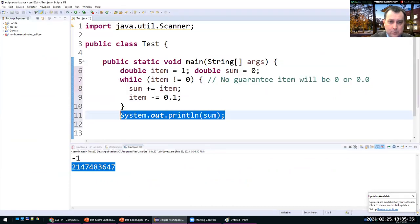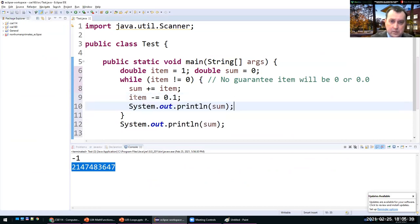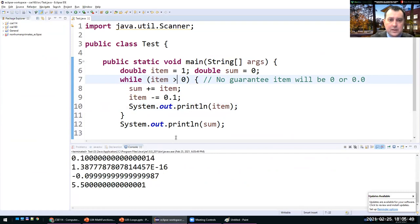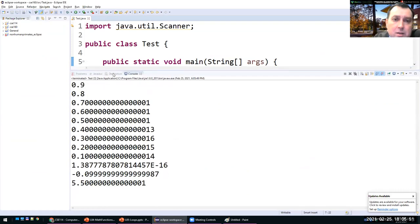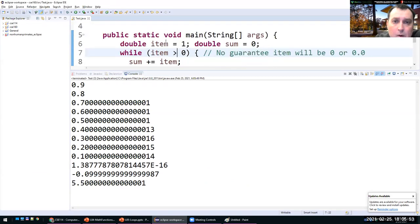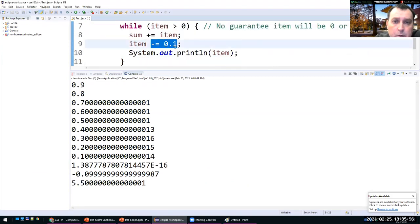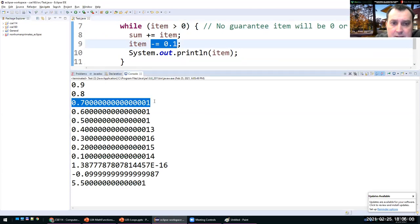So one thing that I'm going to do is print the item inside here. And I'm also going to change this sign to greater than zero. So run it. And one thing that you can see is that we started with something that was one and then we subtracted minus 0.1 at every step. But after two steps, we already see that these are not exact values.